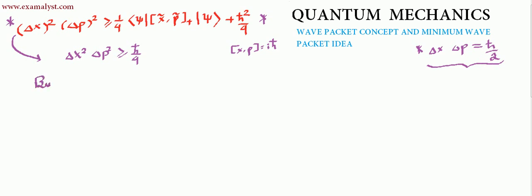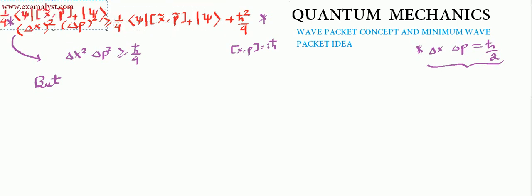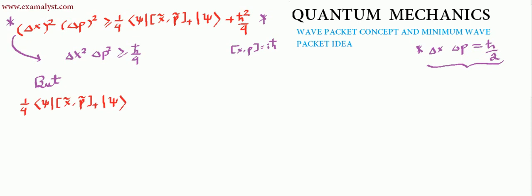However, one more condition needs to be satisfied: if this positive definite term is zero, then you get the minimum uncertainty product. So the first condition is that this positive definite term must be zero — only when this is zero will you get the minimum uncertainty product.